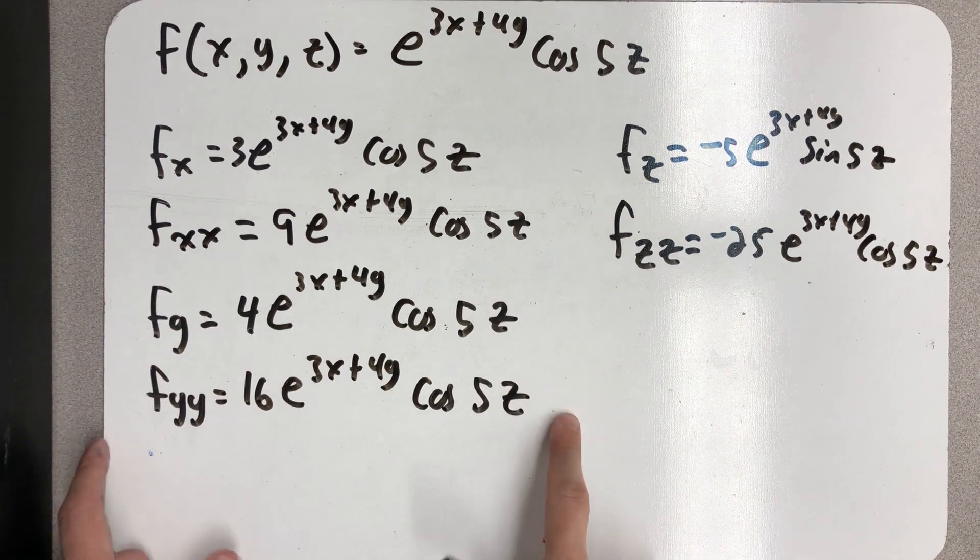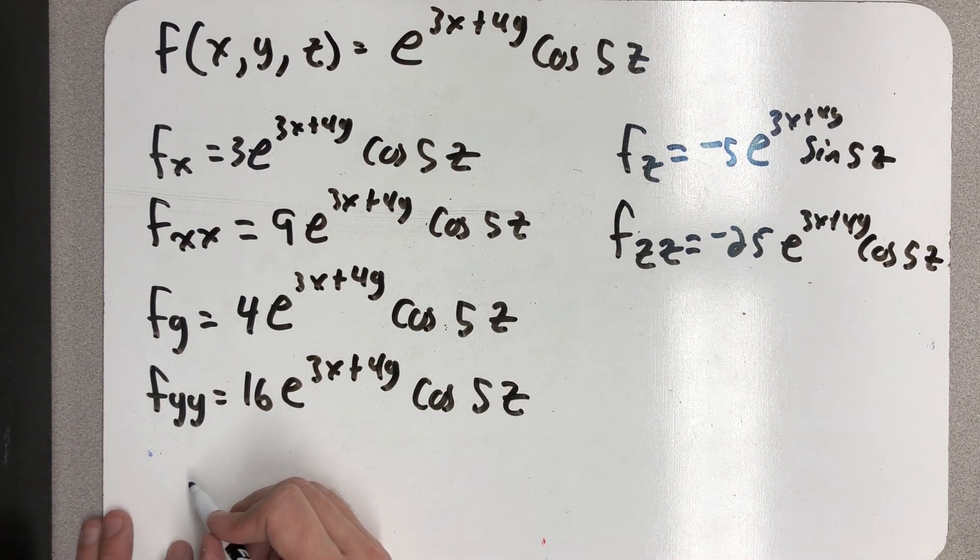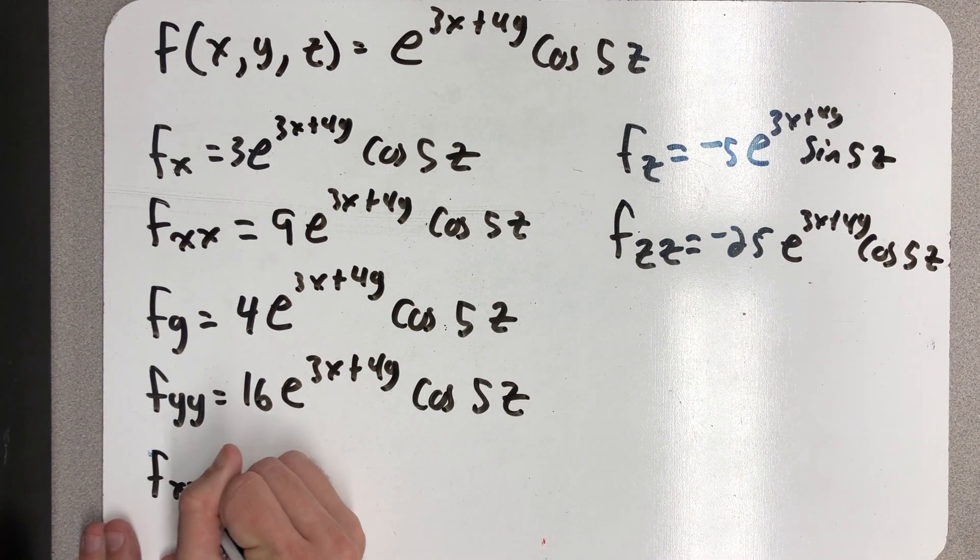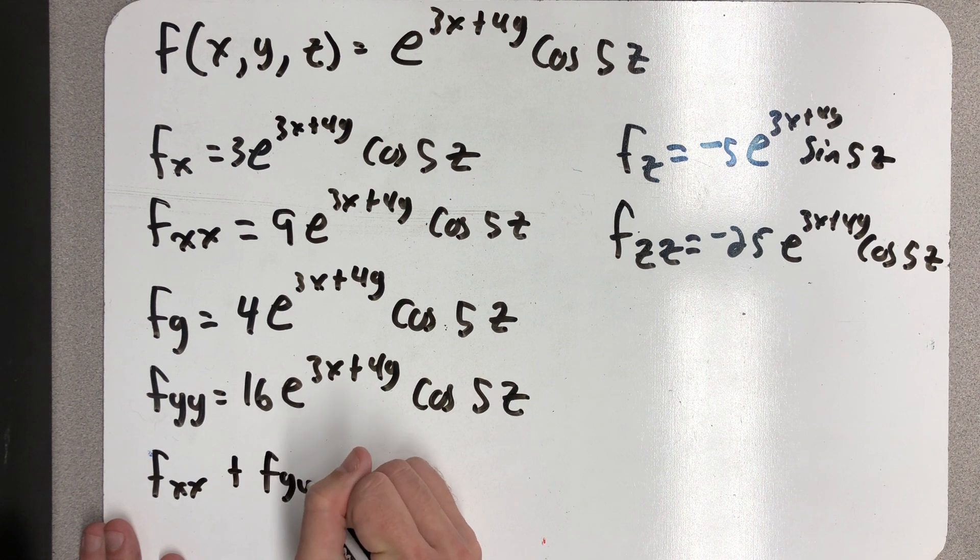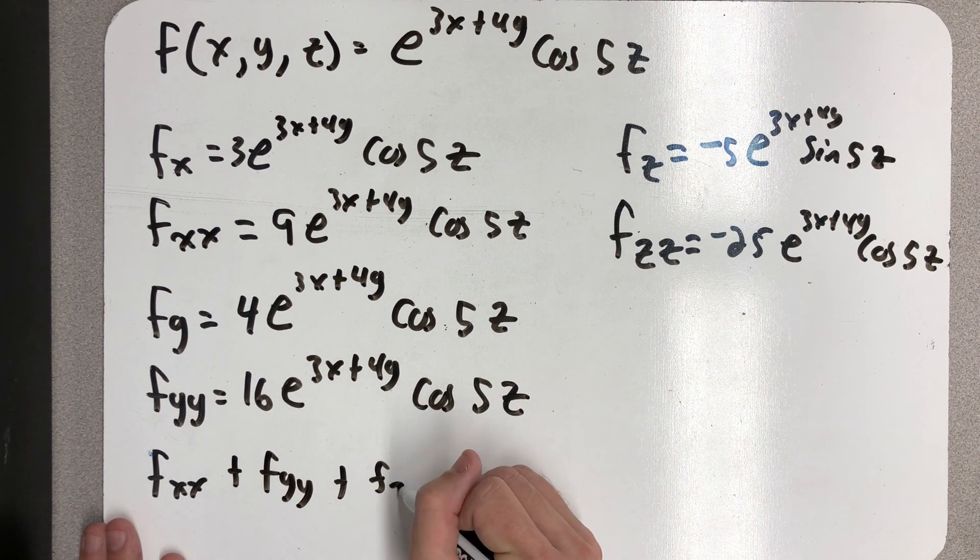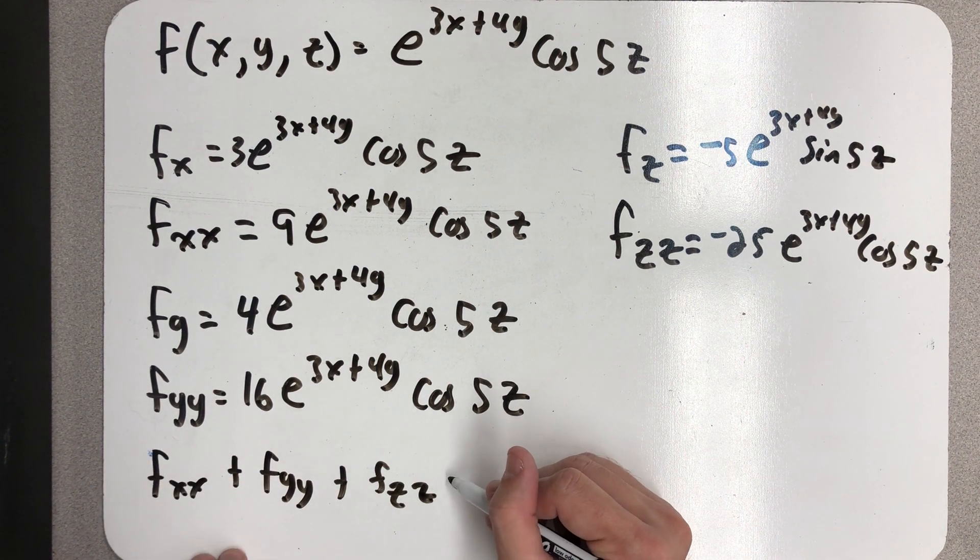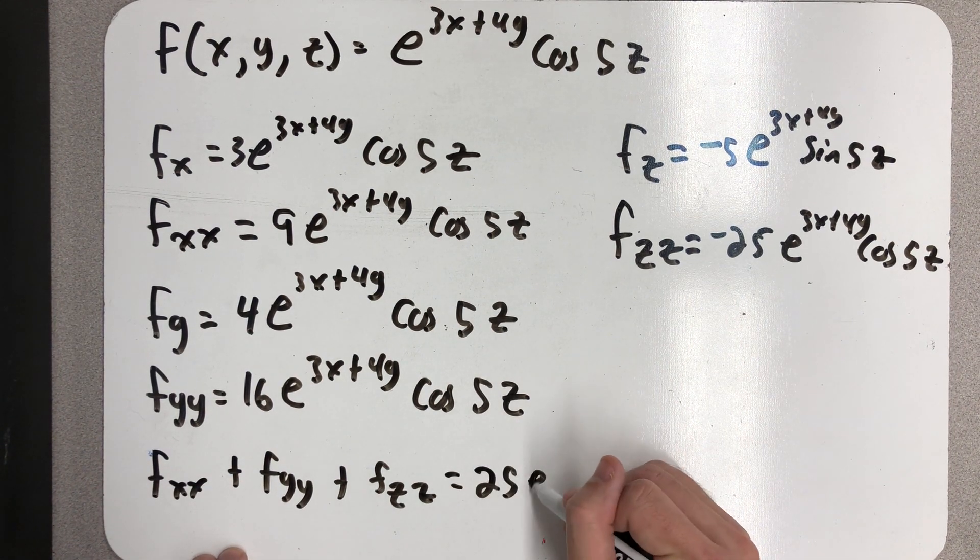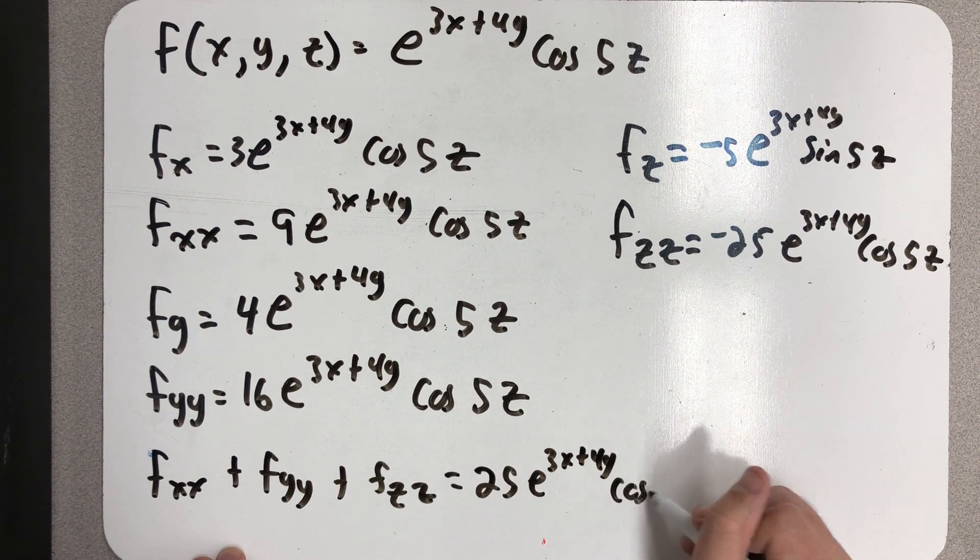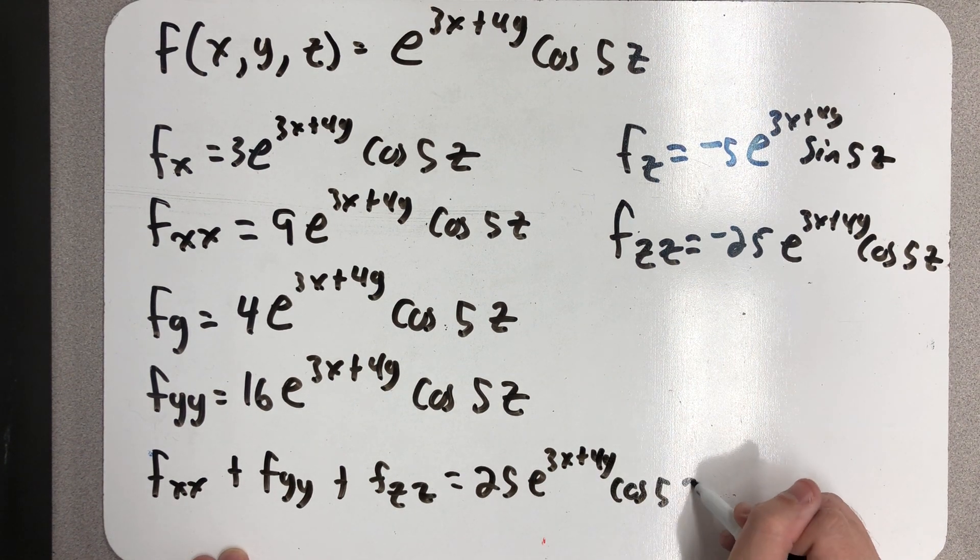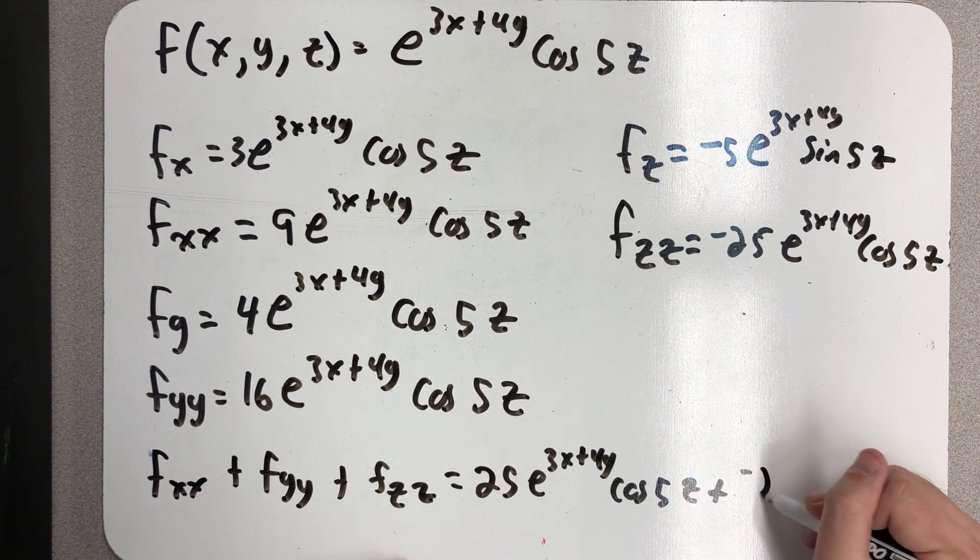And now I have to think about adding these things together. Well, f_xx plus f_yy plus f_zz. Well let's see, that's 9 and 16—that would give me 25 e^(3x+4y) cosine of 5z, plus a minus that same thing.